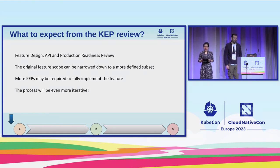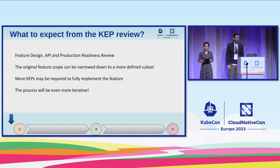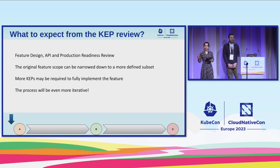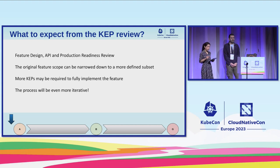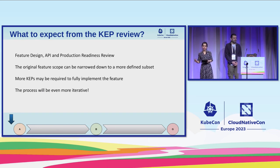The KEP review process is a collaborative process designed to ensure that the changes — in terms of the proposal and the API changes — are well-designed and align with the overall goals of the project. It is important to be responsive to feedback and be willing to make changes, such as adjusting the scope of the KEP, or postponing some components of the proposal to a later stage or a later KEP. It is all an iterative process.